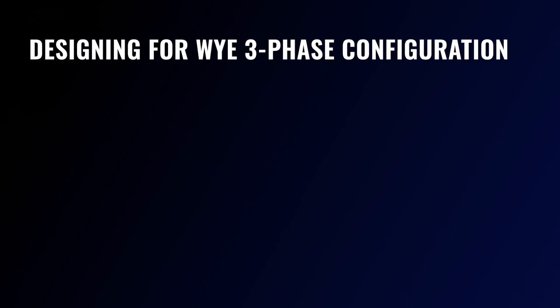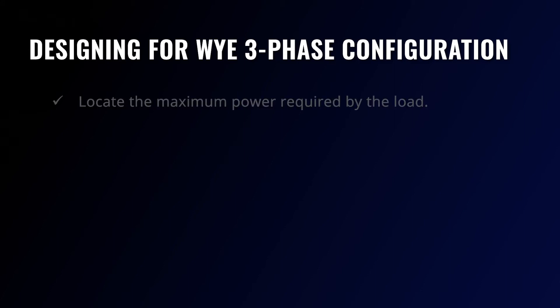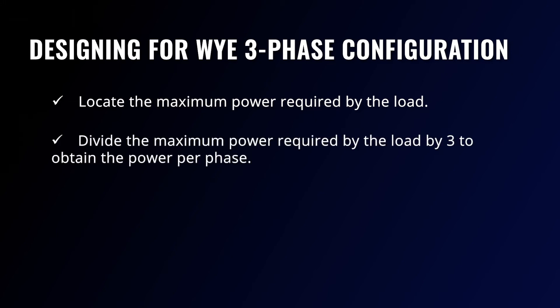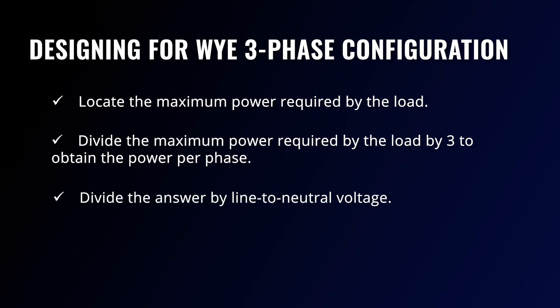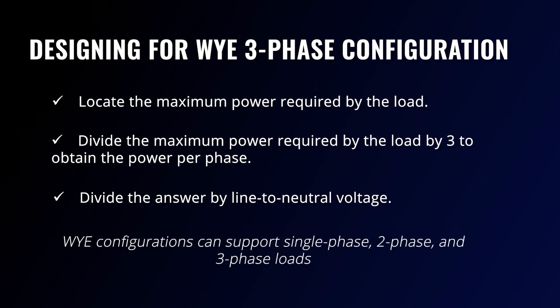As opposed to delta, this configuration can be used as a four-wire circuit or a five-wire circuit. Y configurations are generally used in power distribution networks and are primarily required in applications that call for fewer starting currents and travel longer distances. To design for the Y three-phase EMI filter, you must locate the maximum power required by the load, divide it by three to obtain the power per phase, and divide the answer by the line-to-neutral voltage. Y configurations are prepared for power distribution because they can support single-phase, two-phase, and three-phase loads.